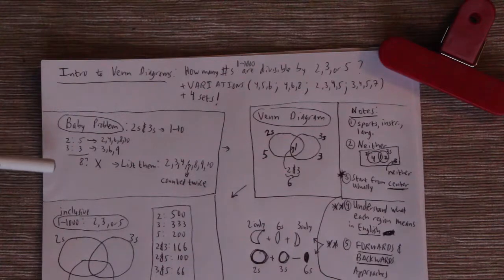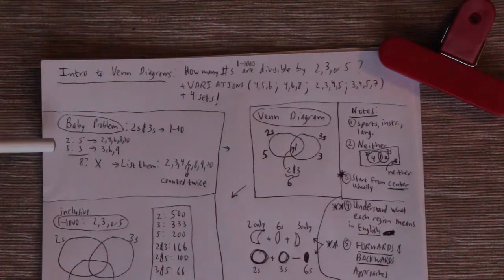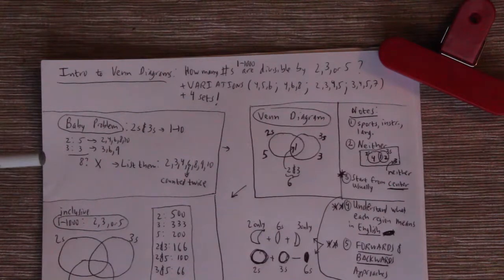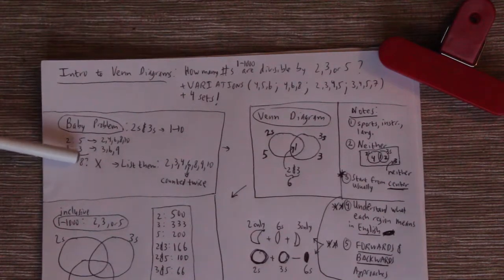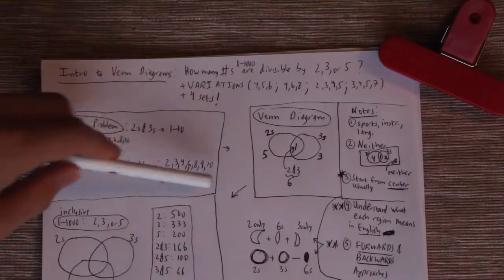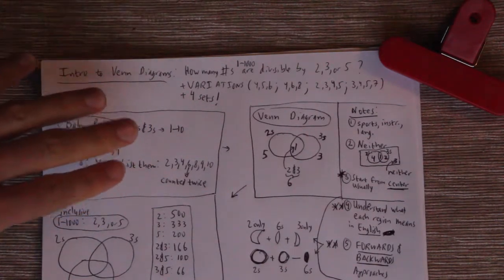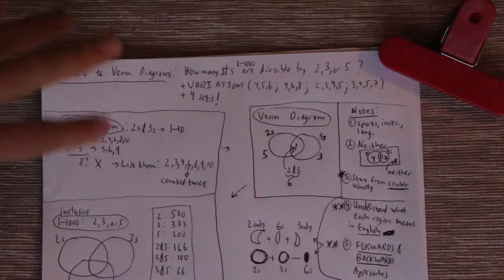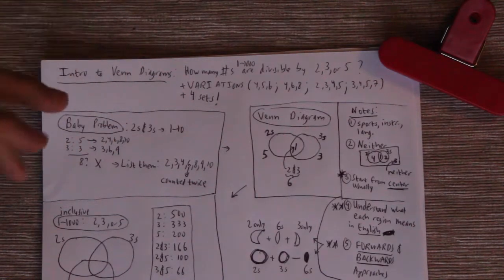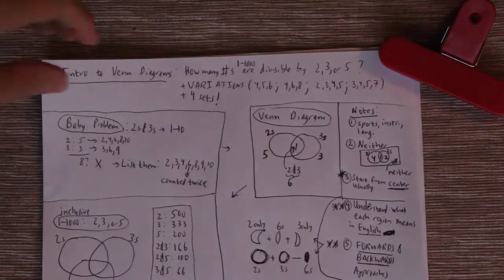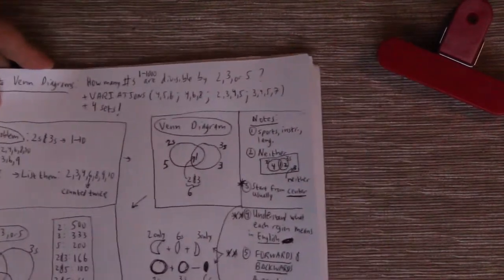So what we really should be doing is counting the twos, counting the threes, and then subtracting the overlap, which are how many sixes, and there's one six. So 8 minus 1 indeed gets us 7. That baby problem suggests that maybe if we could organize our work in a more visually appealing way, this might help us. And so enter the Venn diagram.